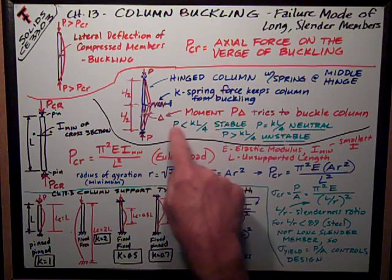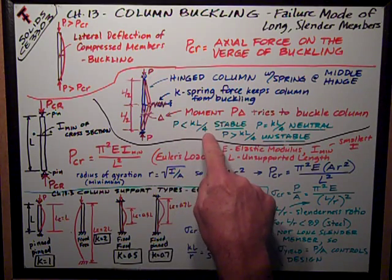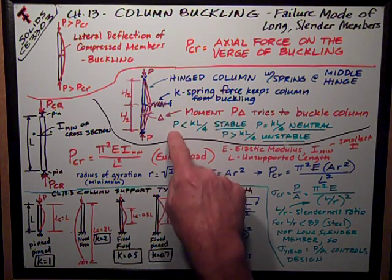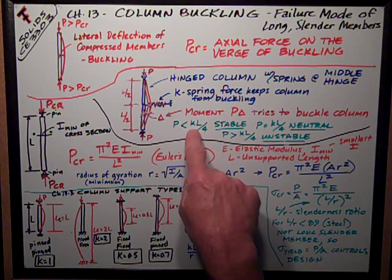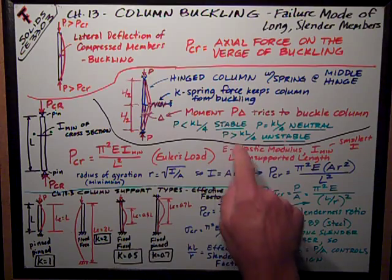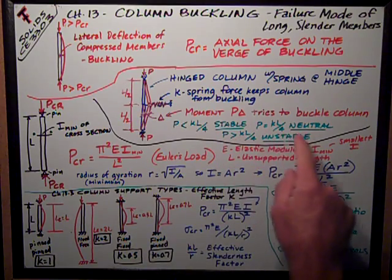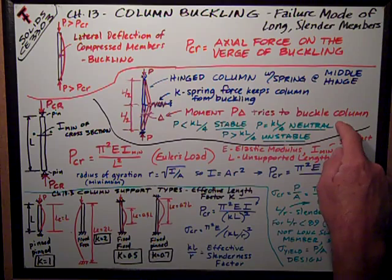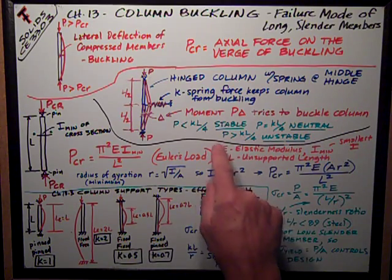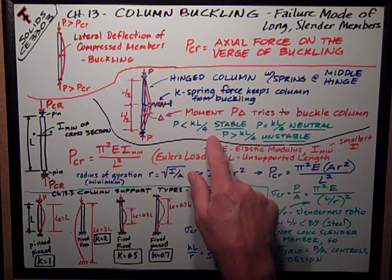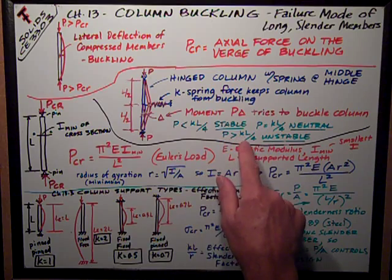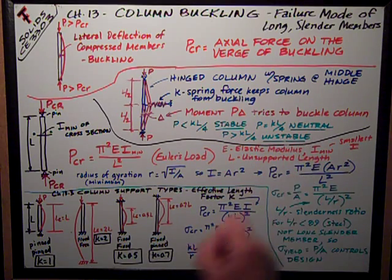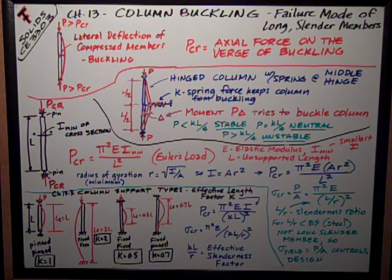So as long as the force is less than what the book derives as KL over 4 — where K is that spring constant — the column is stable. Once P equals KL over 4, it's neutral, fixing to buckle. And if the axial force is greater than KL over 4, it is unstable and the least little deflection will cause it to buckle.